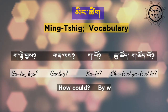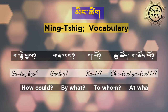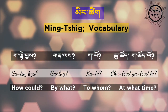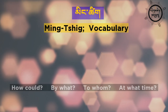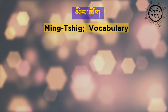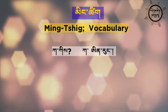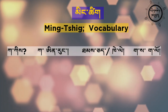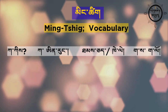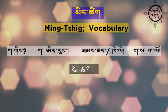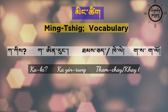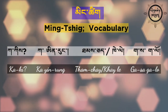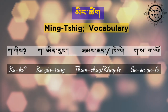Haukut — by what, to whom, at what time. Dile, ka ki, ka inrung, tamje, yana kele, kasakalo. Ka ki, ka inrung, tamje, yana kele, kasakalo.